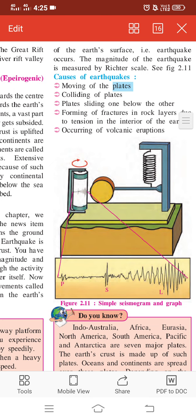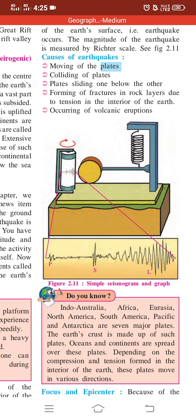The second cause is colliding plates — when plates hit each other, there is a chance for an earthquake. Then there is plate sliding: one plate goes up over the other plate and one plate goes down below the other. In such conditions, an earthquake will occur. Also, forming fractures on rock layers due to tension in the interior of the earth can cause earthquakes — the tension breaks the rock and creates a fracture. Finally, the occurrence of volcanic eruptions may also cause earthquakes.